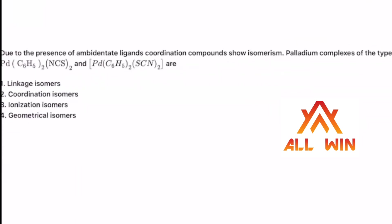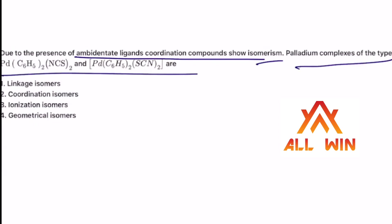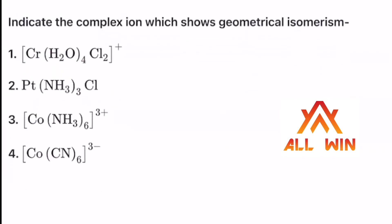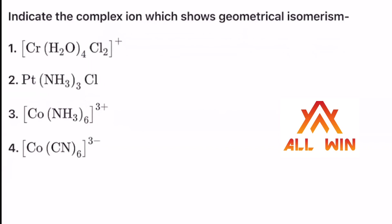Due to the presence of ambidentate ligands, coordination compound shows isomerism. Radium complexes show isomerism — linkage isomerism. In this case, we have nitrogen. We need to indicate the complex which shows linkage isomerism.